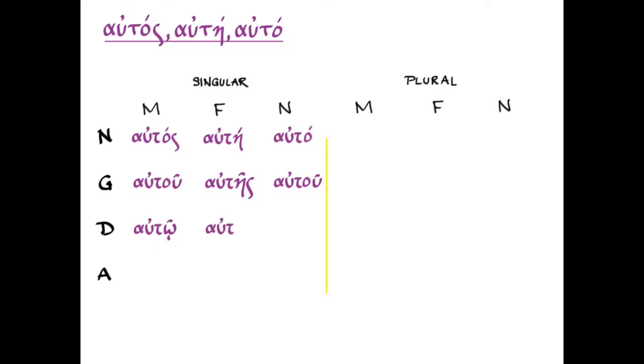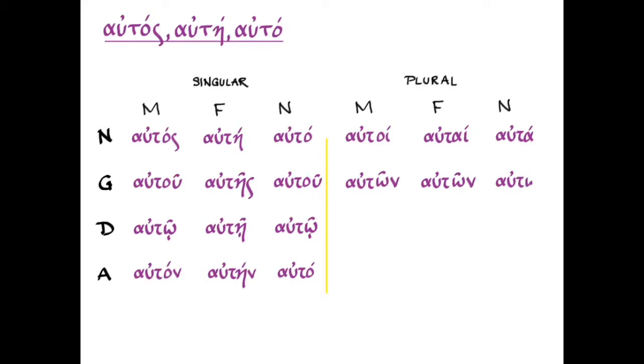Autu, autays, autu, autow, autay, autow, auton, autane, autaw. And then in the plural, autoy, autai, autaw, autone, autone, auton, autois, autais, autois, and autus, autas, autaw.